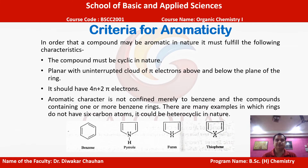Now let us discuss the criteria for aromaticity. In order for a compound to be aromatic in nature, it should follow certain important conditions. One of the important conditions is that it should be cyclic in nature. As we can see in the examples below, all compounds are cyclic. In benzene, all the corners represent carbon atoms which are joined to each other forming a cyclic ring.